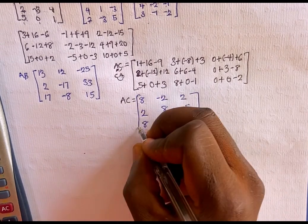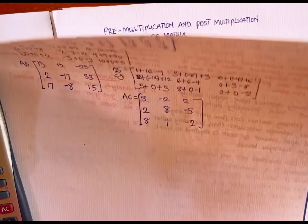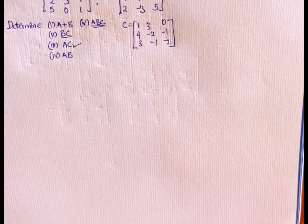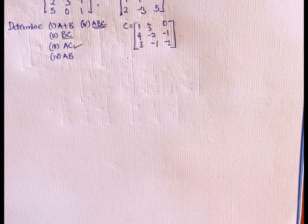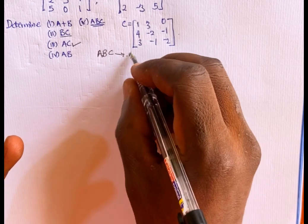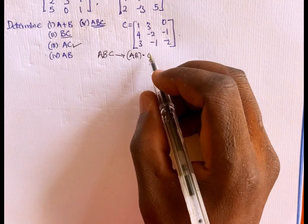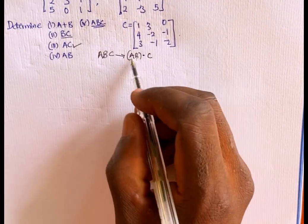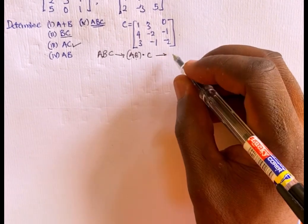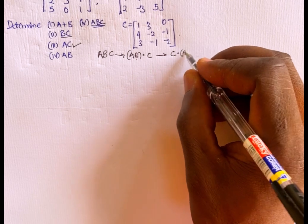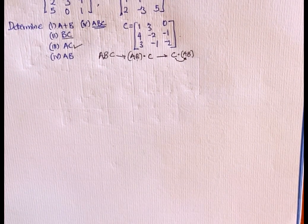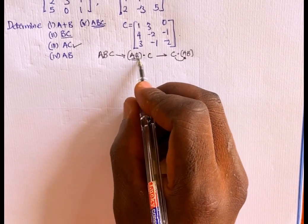This is our AC. Let's move to the last question. We are asked to find ABC. According to pre-multiplication and post-multiplication, whenever we have ABC, we can take it as (AB) multiplied by C. In this case, C is pre-multiplied by matrix AB, and inside AB, matrix B is pre-multiplied by matrix A. Since we already found matrix AB = [13, 2, 17; 12, -17, -8; -25, 33, 15], we use it directly.